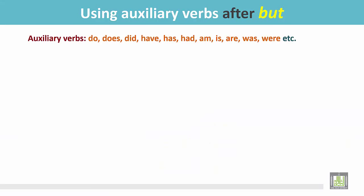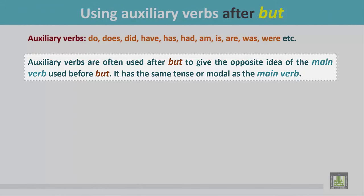These are auxiliary verbs. They are used in different tenses like present simple, present perfect, present continuous, past continuous, and so on. Auxiliary verbs are often used after 'but' to give the opposite idea of the main verb used before 'but'. It has the same tense or modal as the main verb.